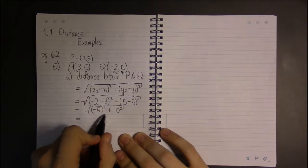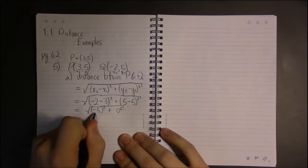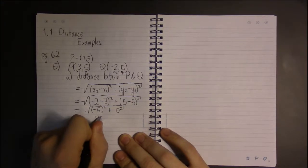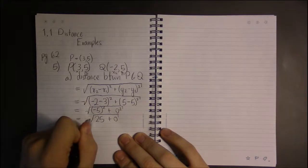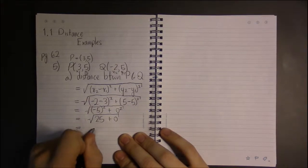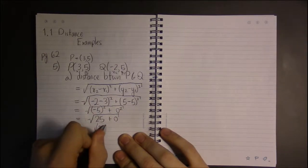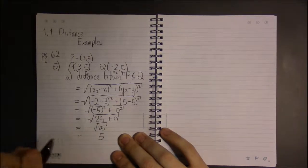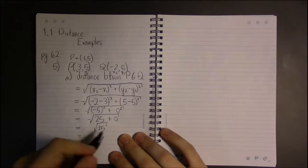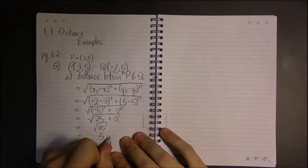-5 times -5, or -5 squared, is a positive 25. 0 squared is just 0. So this is simply the square root of 25, or 5. The distance between these two points is 5 units.